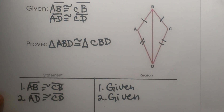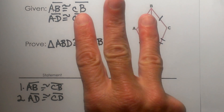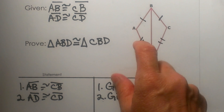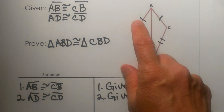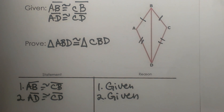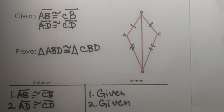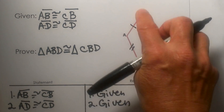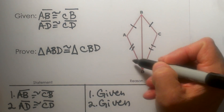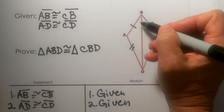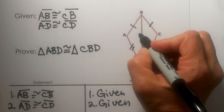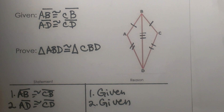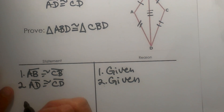Now what else can we figure out? Because in a proof you need three things — three sides, or two sides and an included angle, or different combinations. So let's see what we can draw from the diagram. Well, the two triangles share this common side BD, so the triangle on the left and the triangle on the right share side BD, and I can mark it congruent to itself.